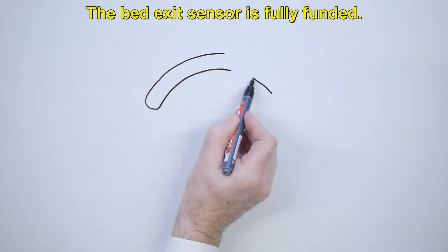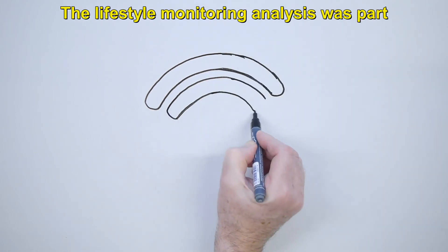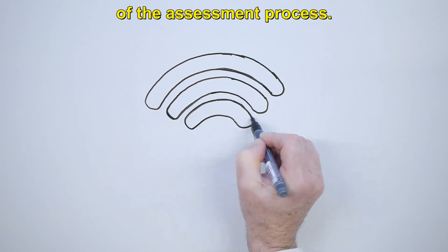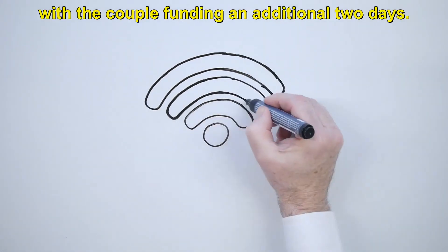And the cost? The bed exit sensors were fully funded. The lifestyle monitoring analysis was part of the assessment process. The gardening group was funded three days a week, with the couple funding an additional two days.